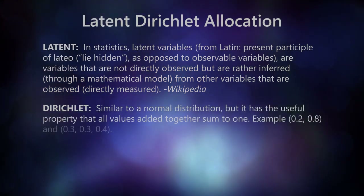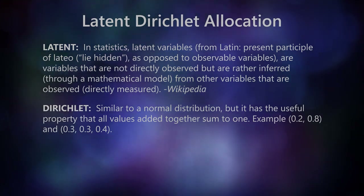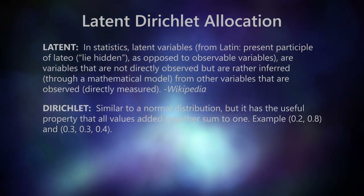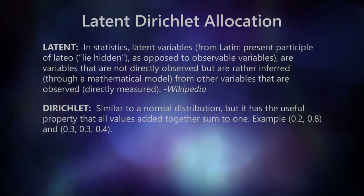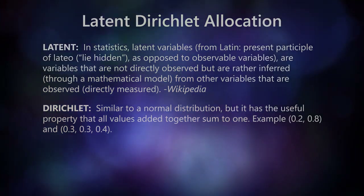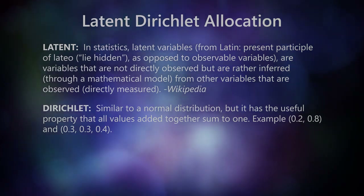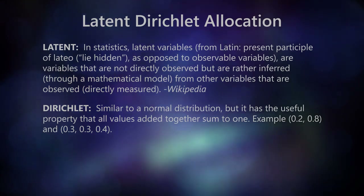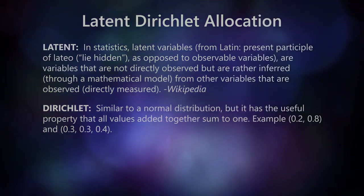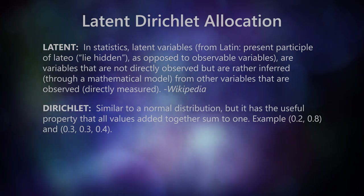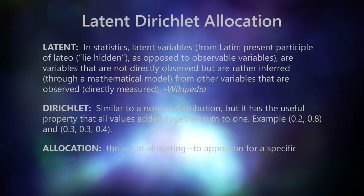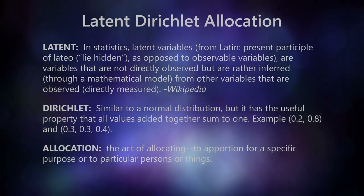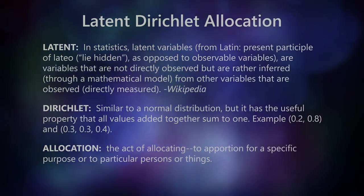Dirichlet: by now we all know what a normal distribution looks like and how it works. A Dirichlet distribution is very similar, but it has a useful property that all values added together sum to 1. For example, 0.2 and 0.8, or 0.3, 0.3, 0.4. Dirichlet noise is a sample of random values between 0 and 1 which all add up to 1. And allocation: the act of allocating — to apportion for a specific purpose or to particular persons or things, from Merriam-Webster.